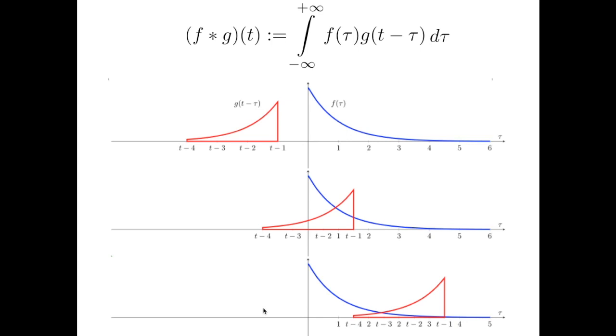And something that I'm not representing here, but it will be clear in the next slide, is that these two functions have to be multiplied for every value of t. So for every snapshot, like in this case for this value of t, this one for this other value of t, and this one for this other value of t, they have to be multiplied, and then the area below has to be computed.